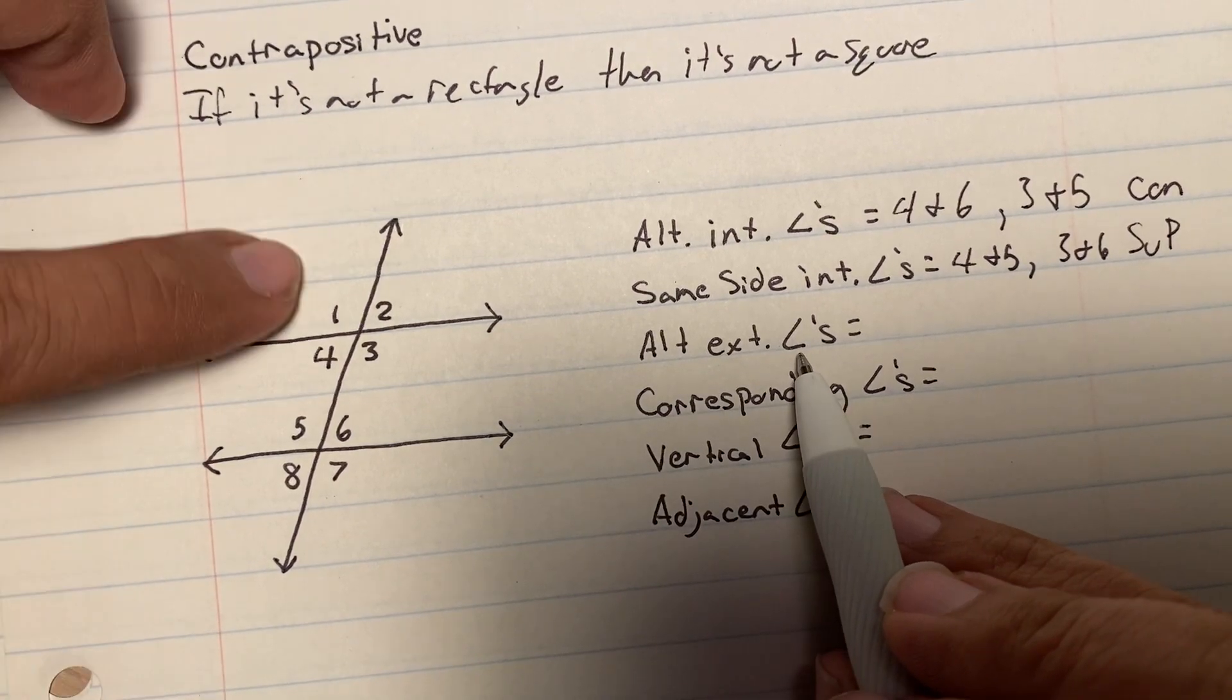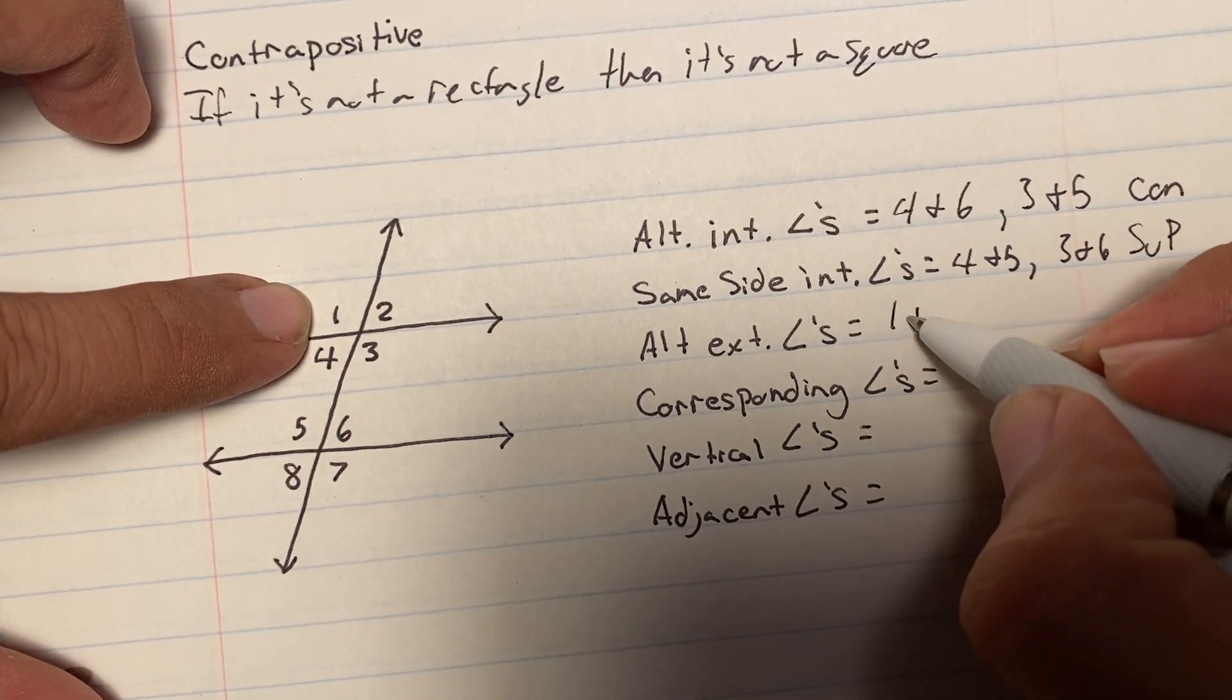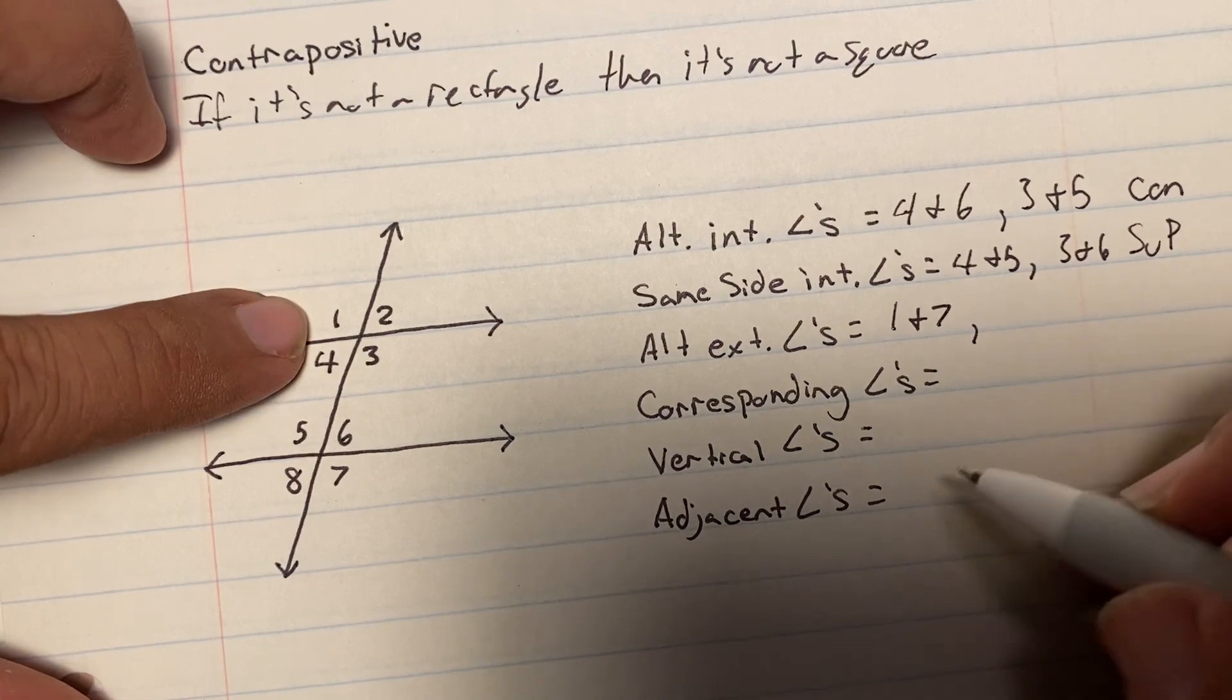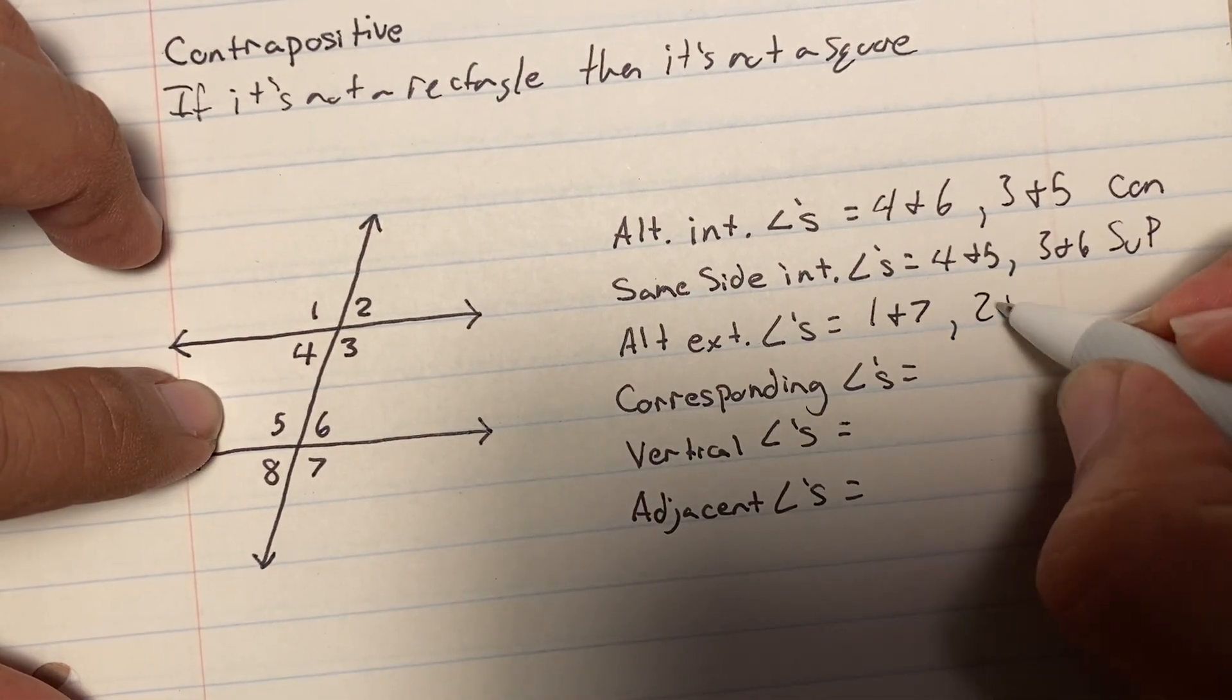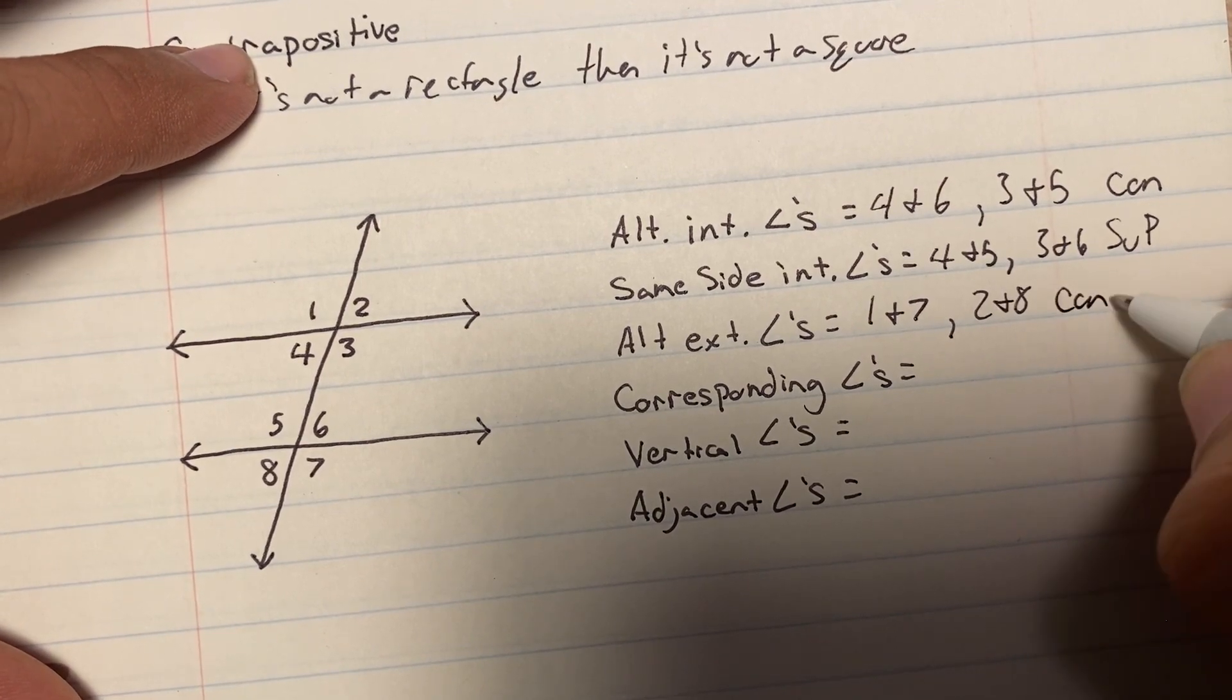Okay, alternating exterior angles, alternating exterior angles, 1 and 7, or 2 and 8, are congruent as well.